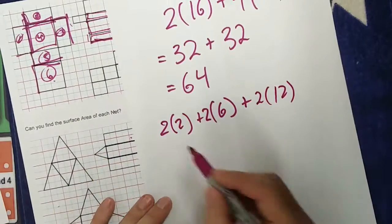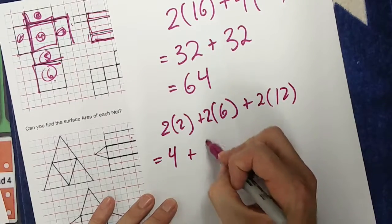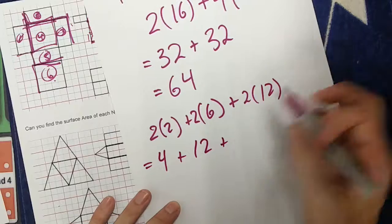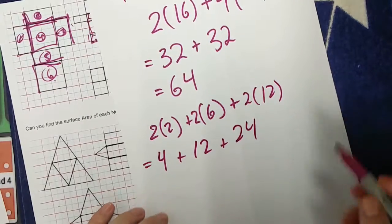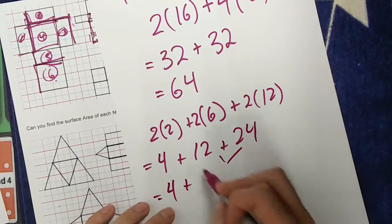Well, add them all up together. I have 2 2s, which is 4, plus 2 6s, which is 12, plus 2 12s, which is 24. Add them up. Okay, I just add these ones up. Here I have 4 plus these 2 together. I have 30.